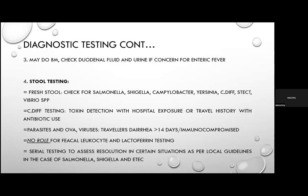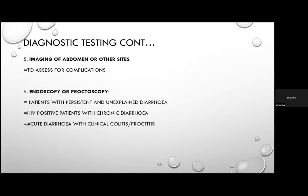Serial stool testing is done in certain situations per local guidelines — for Salmonella, Shigella, and enterotoxigenic E. coli — mainly due to concern for prolonged carriage, to assess whether patients can return to work, group social activities, or childcare. Abdominal imaging is done to assess for complications: intestinal perforation with Salmonella, toxic megacolon with C. difficile, hepatic or splenic abscesses with Yersinia, and aortitis or osteomyelitis with Salmonella.